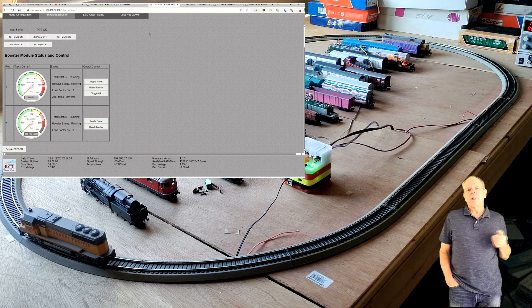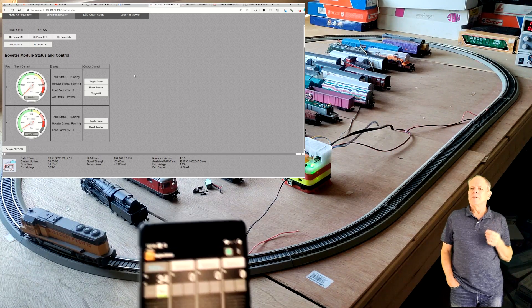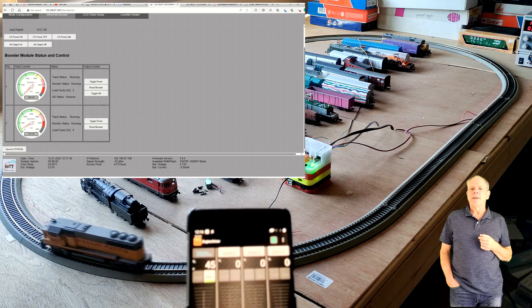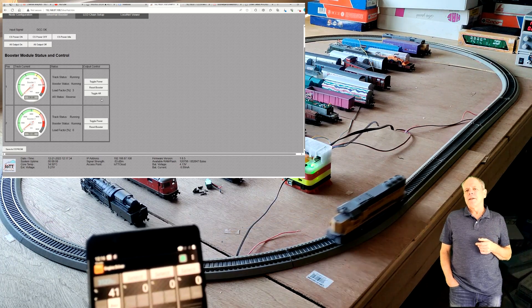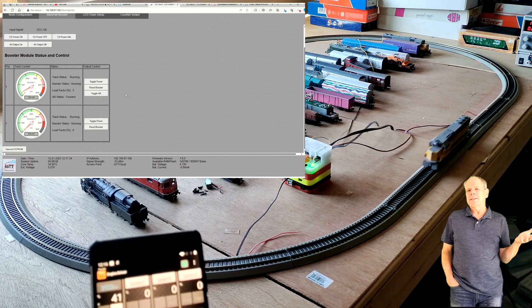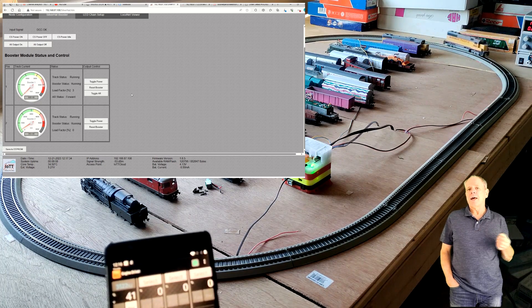Now, let's repeat that run, but this time I manually toggle the polarity while the locomotive is in the middle of section B. So, I click the toggle AR button and when the locomotive now enters section C, the polarity is already correct and no short circuit happens.